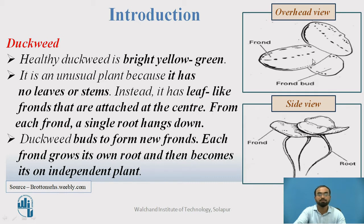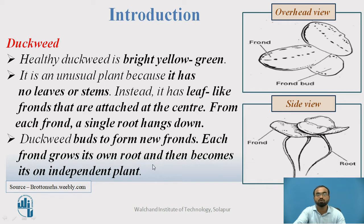As the production increases, small bud fronds also come out from the fronds. If you look at the side view, every frond has a separate root that is continuously inside the water. Duckweed buds to form new fronds. Each frond grows its own root and becomes an independent plant.